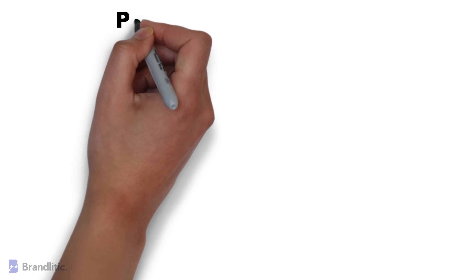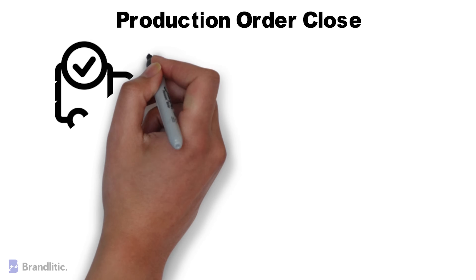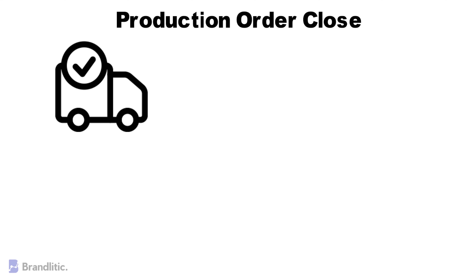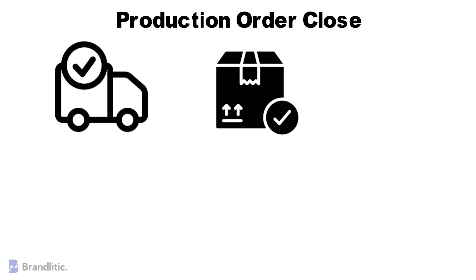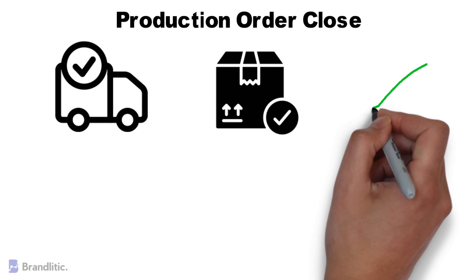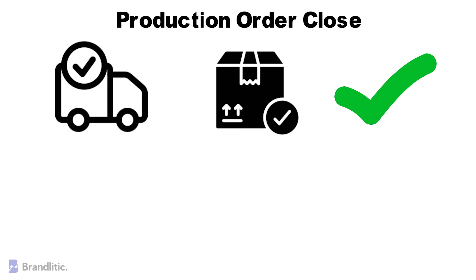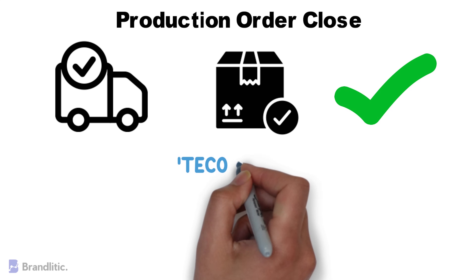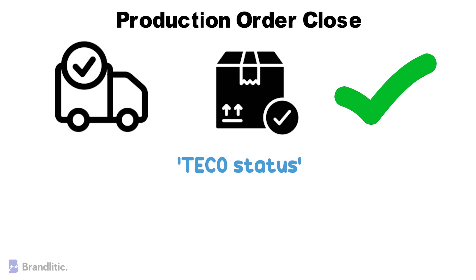Let's talk about production order close. After the production order is delivered completely, or in case we don't want to execute the order further, the order should be technically completed. After the order gets TECO status, it gets deleted from the stock or requirement list and is no longer considered in the material requirement planning run, and all the dependent reservations also get deleted from the system.